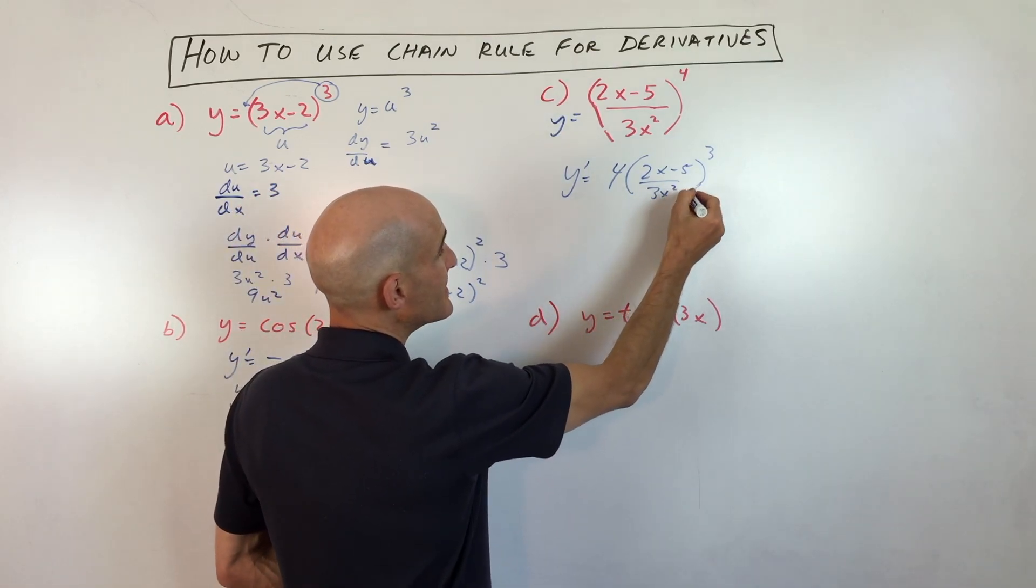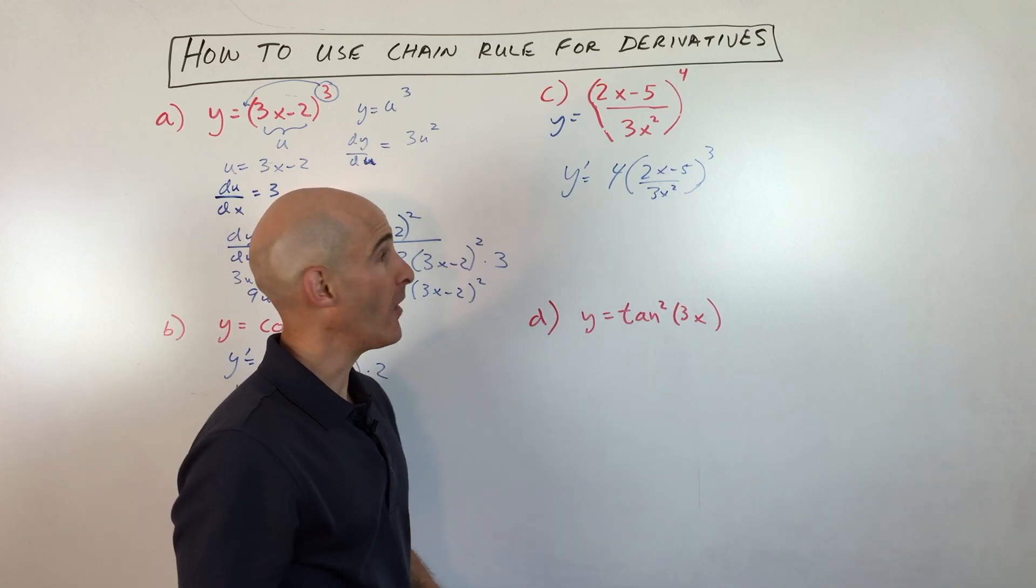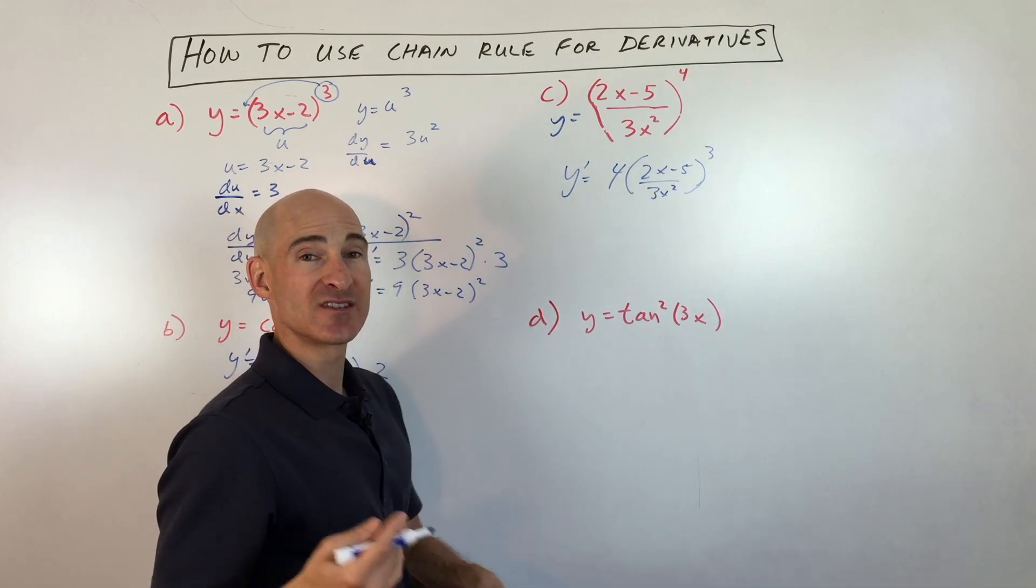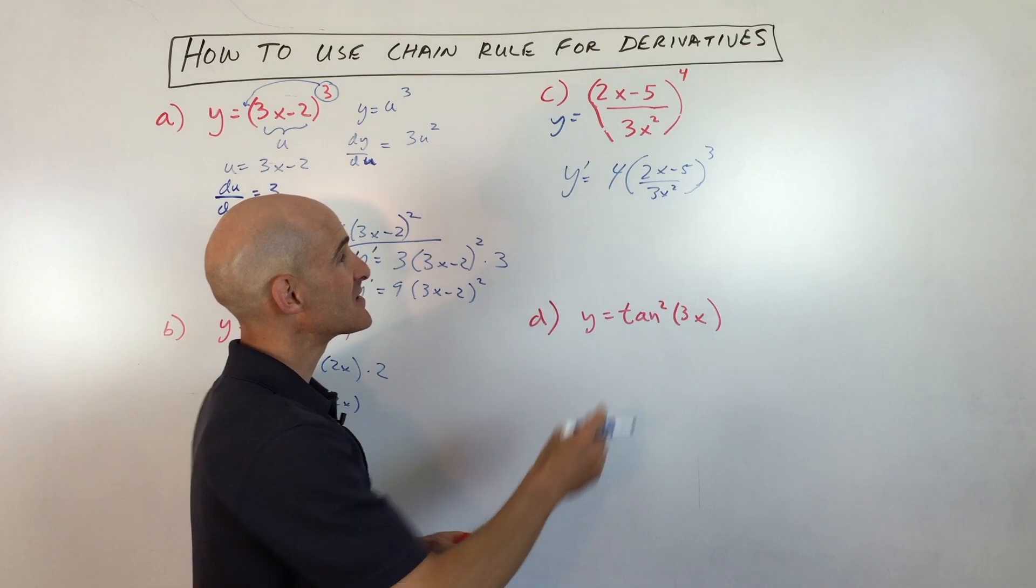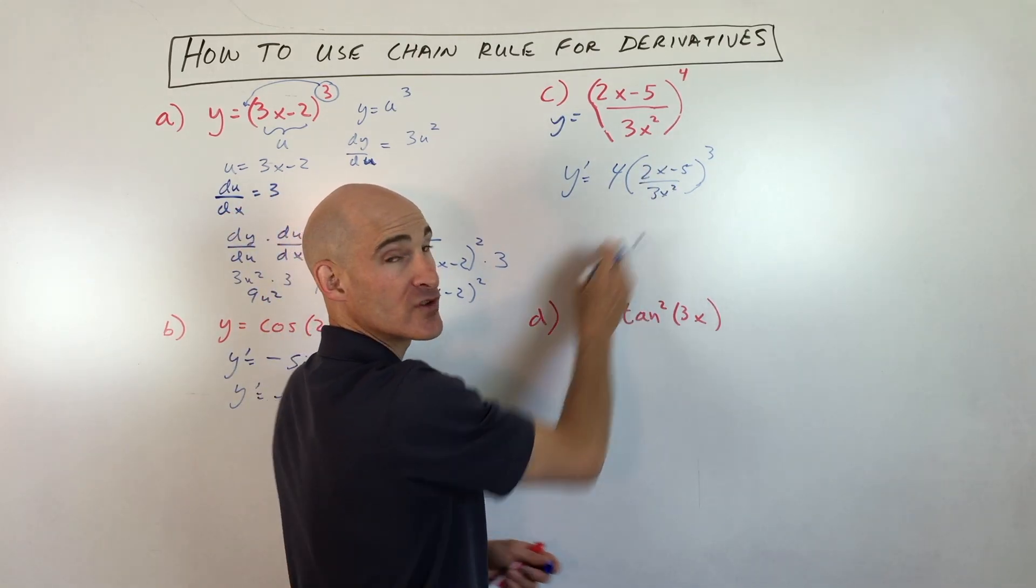But then we have to take the derivative of the inside, and you can see that we have a quotient. So we have to do the quotient rule. You can remember this rhyme: low d-high minus high d-low over the square of what's below.